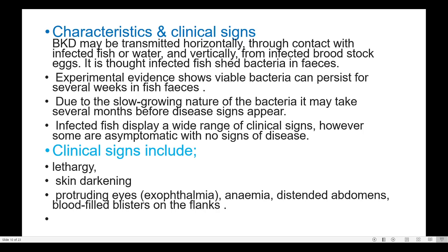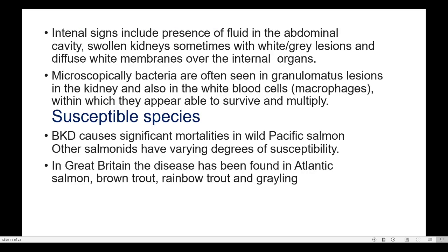Clinical signs include lethargy, skin darkening, protruding eyes (exophthalmia), anemia, distended abdomen, blood-filled blisters on the flanks, and swollen kidneys sometimes with white or grey lesions and diffuse white membranes over the internal organs.